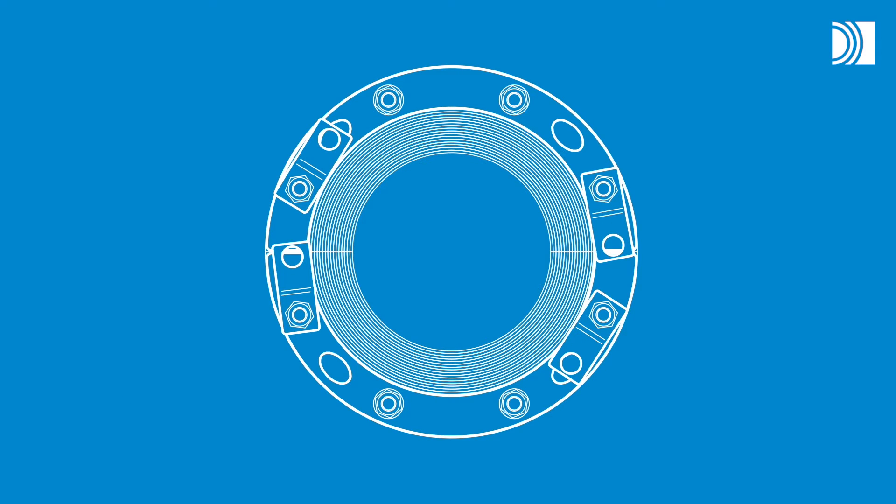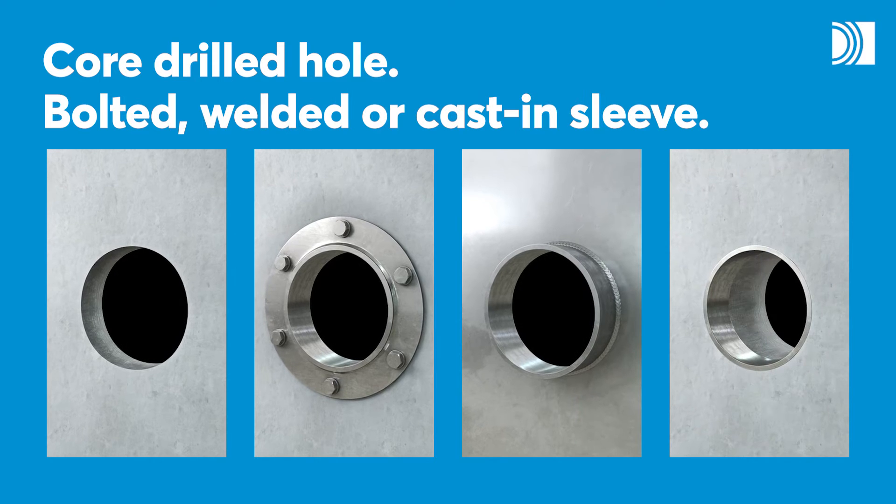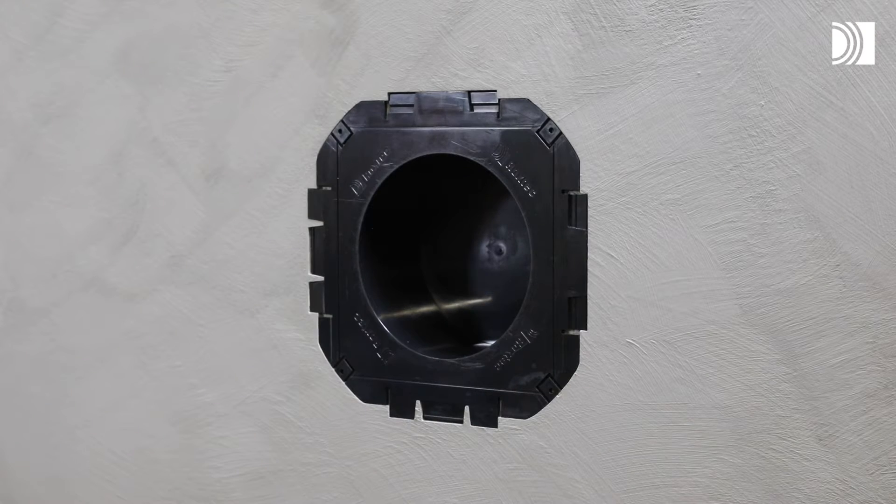With a Roxtec RSUG seal, you can seal openings for a single cable or pipe in different structures. You can install it in a core drilled hole or a bolted, welded, or cast-in sleeve such as a Roxtec knockout sleeve.